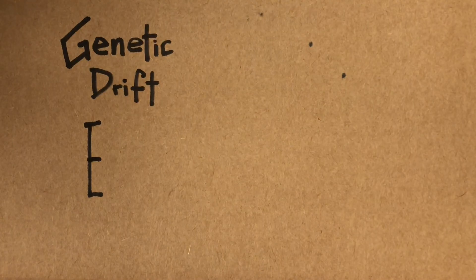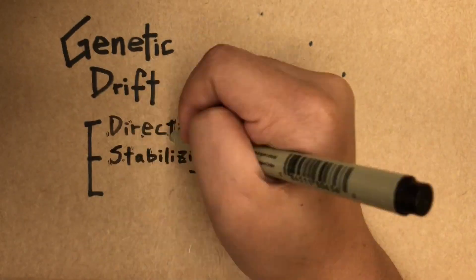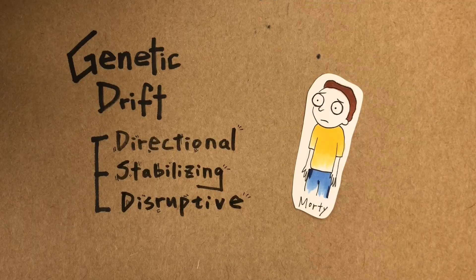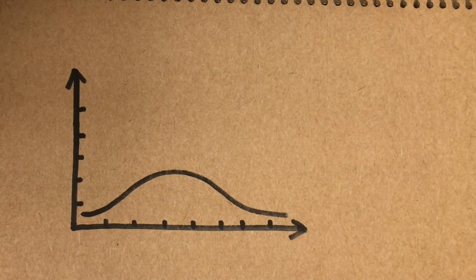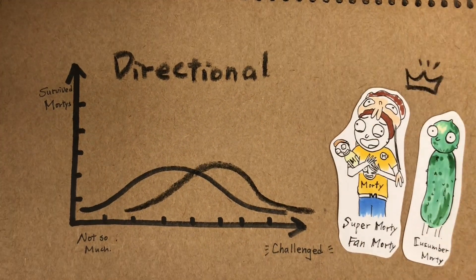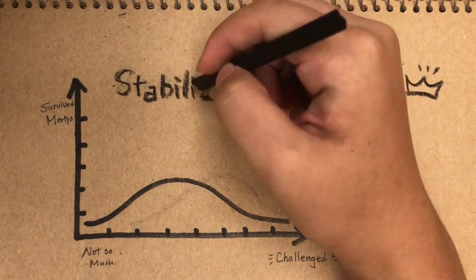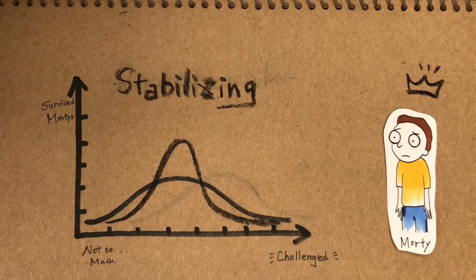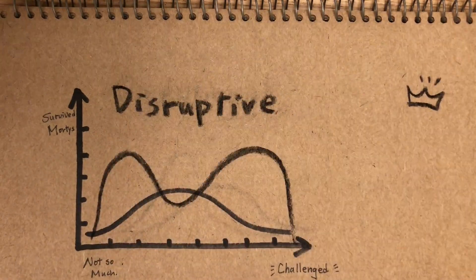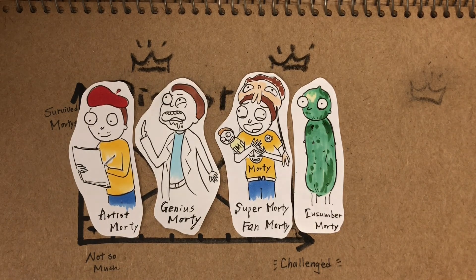Here's the three ways it might change: directional selection, stabilizing selection, and disruptive selection. Let's use Morty as an example. The graph shows how challenged Morty is. For directional selection, the more challenged they are, the better chance they might survive. For stabilizing selection, the mediocre Mortys have the highest chance to survive. And in the case of disruptive selection, those Mortys that fit best are either at extreme ends of the spectrum.